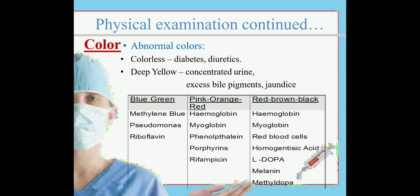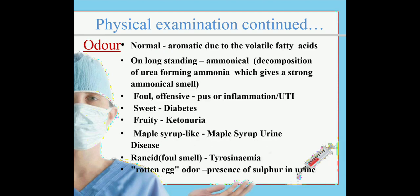The normal odor of urine is aromatic, due to volatile fatty acids. On long standing, the odor changes to ammoniacal as urea forms ammonia. Foul or offensive smell can be sensed in cases of pus, inflammation, or UTI. Sweet or fruity smell occurs in case of diabetes or ketonuria. Maple syrup-like smell is associated with maple syrup urine disease, and rotten egg odor occurs in the presence of sulfur in urine.